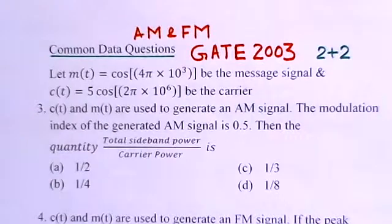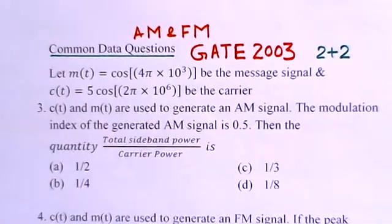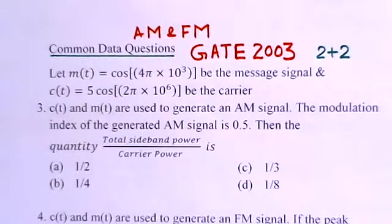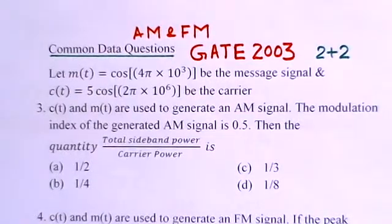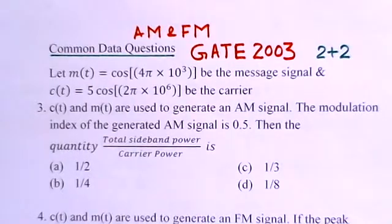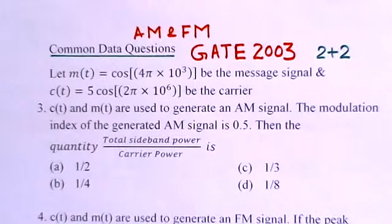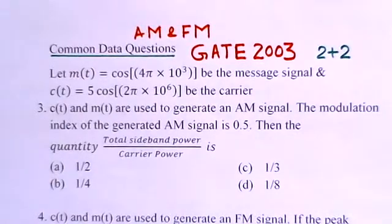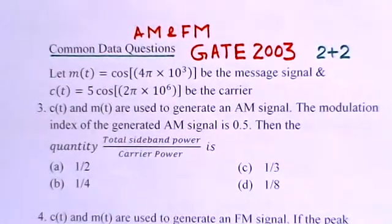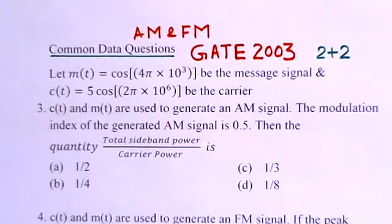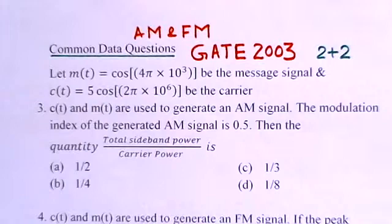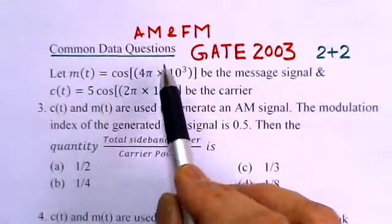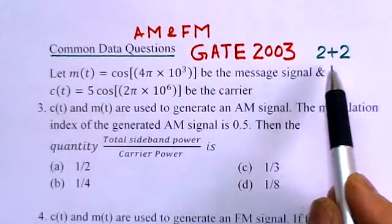The problem considered here is from GATE 2003 and it is a common data type problem having two parts of two marks each. The first part is on amplitude modulation and the second part is on frequency modulation.